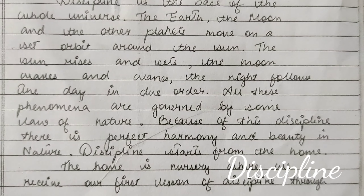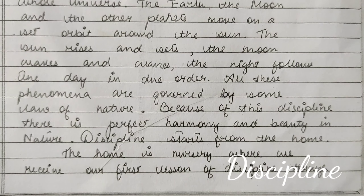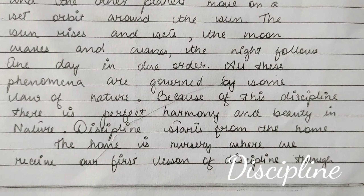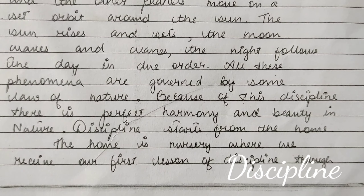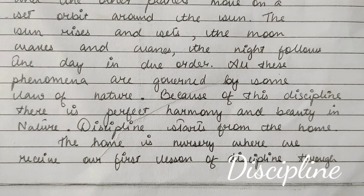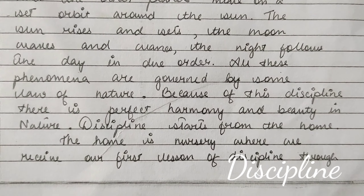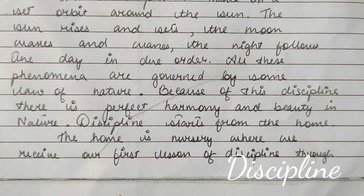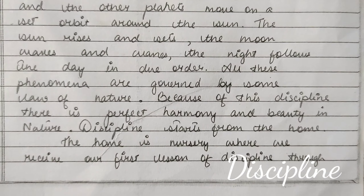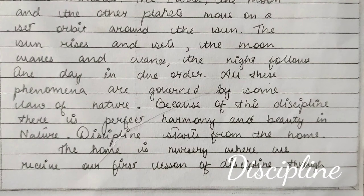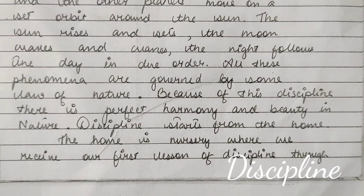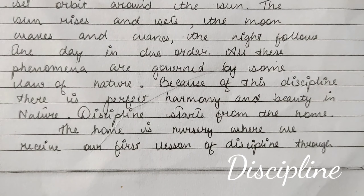Discipline is the base of the whole universe. The earth, the moon, and the other planets move in a set orbit around the sun. The sun rises and sets, the moon waxes and wanes, the night follows the day — all in due order. All these phenomena are governed by some law of nature, and because of this discipline there is perfect harmony and beauty in nature.